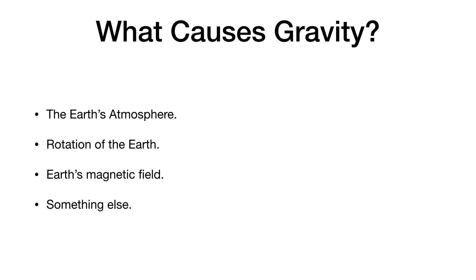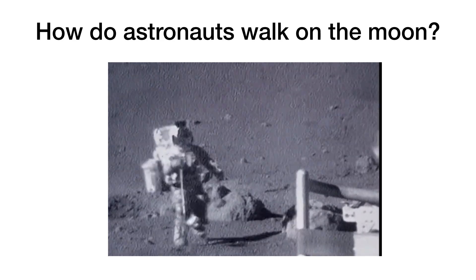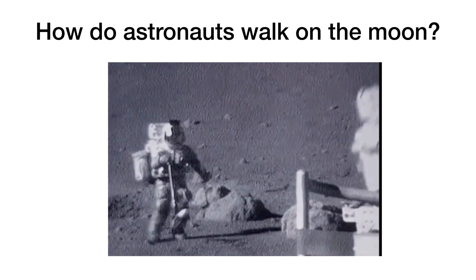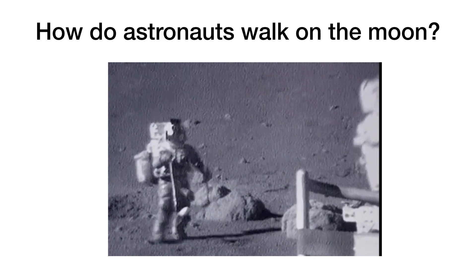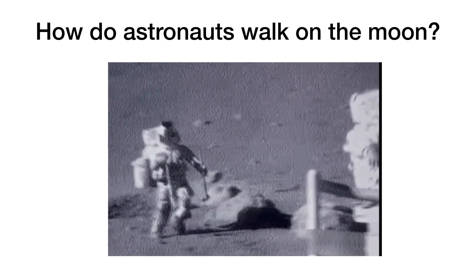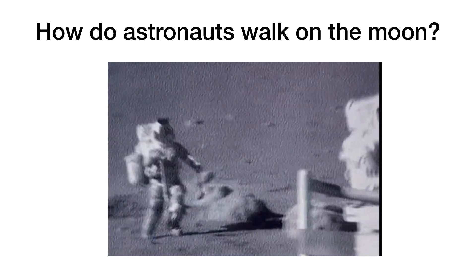If you go and ask your friends, what causes gravity? Here are some common answers. The Earth's atmosphere causes gravity because if you go to space, there's no air and there's no gravity. The rotation of the Earth causes gravity. Magnets attract things without touching, so maybe the Earth's magnetic field causes gravity. Let's go through these three ideas and see if those are true. Here is a video of an astronaut walking on the moon, and there's no air on the moon. So how can an astronaut walk on the moon without gravity? The surprising answer that comes up more than you would think is heavy boots. There is indeed gravity on the moon, even though there's no air.